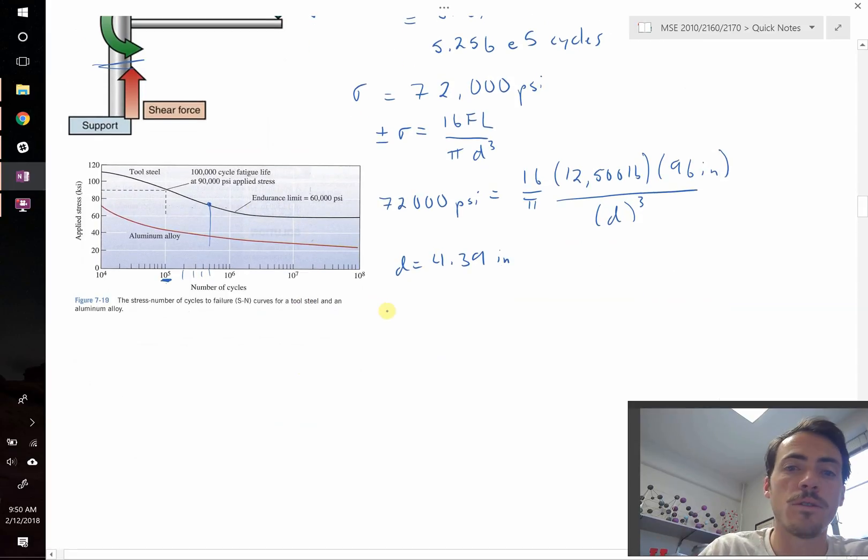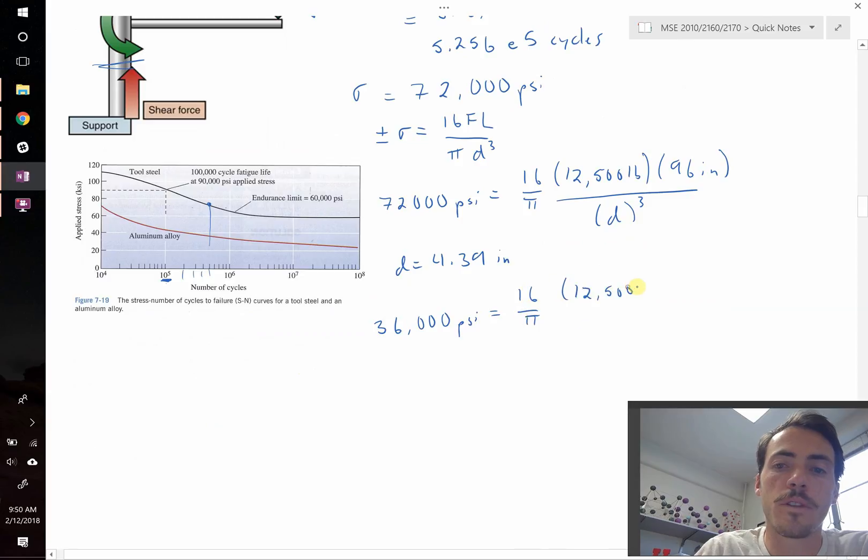36,000 PSI, so it's going to withstand half the stress, that would be equal to 16 pi over the same load, 12,500 pounds, times 96 inches, because our length isn't changing. But this time, we're going to solve for D, and it's going to be a different value.